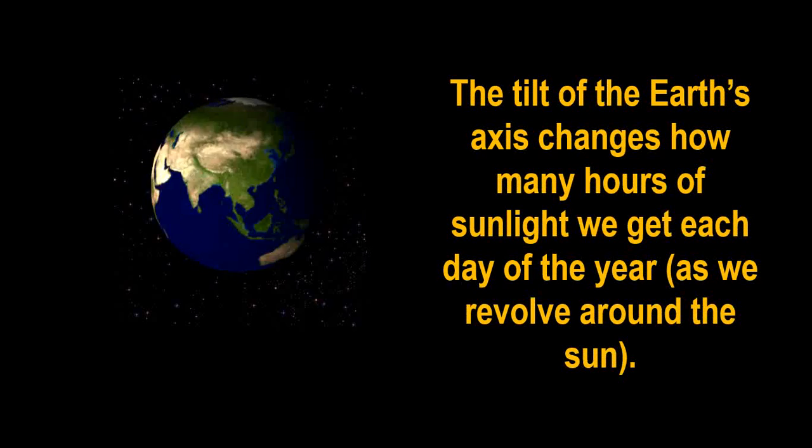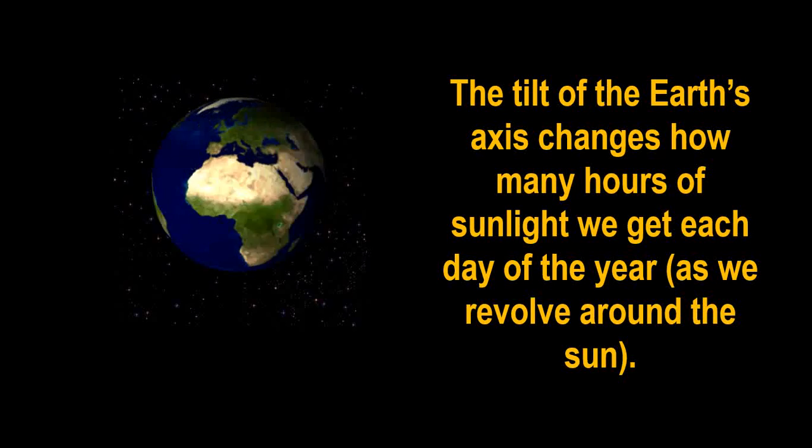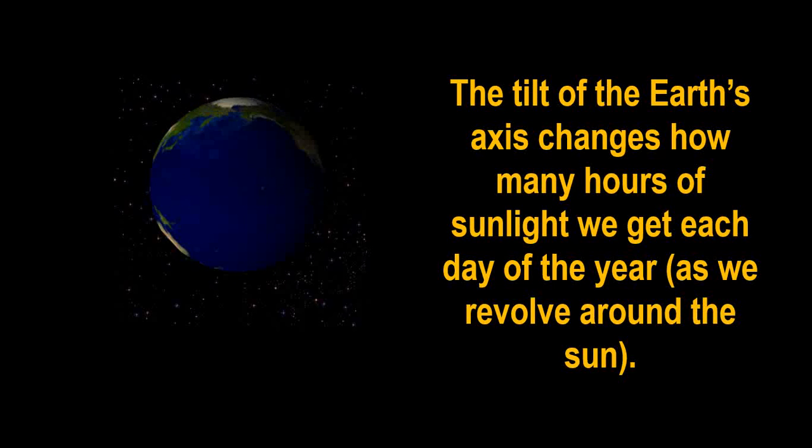Since the Earth's axis is tilted, it means that we'll have a different number of hours of sunlight each day as the Earth revolves around the sun.